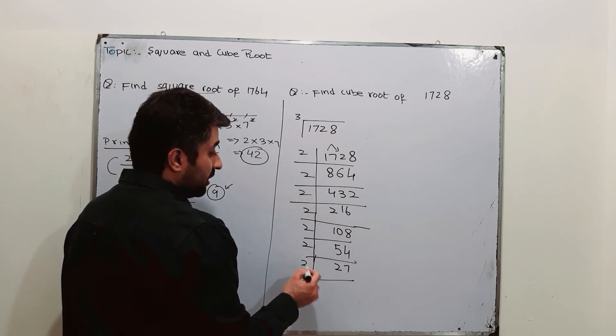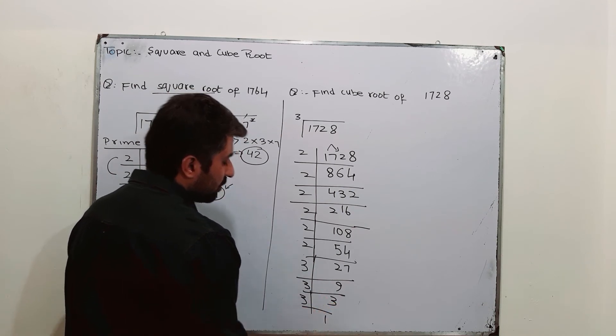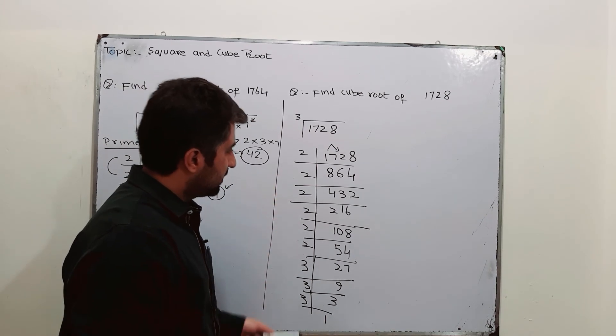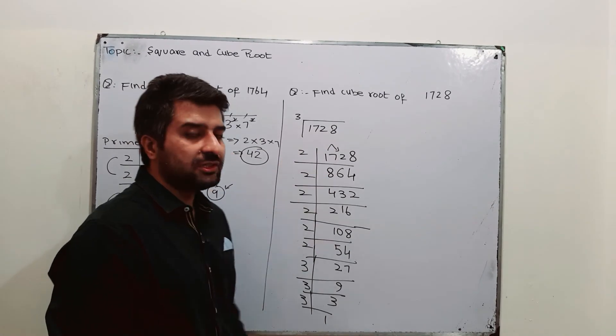3, 9 times 27. 3, 3 times 9. 3, 1 times 3. These are prime numbers and I have done prime factorization of 1728.